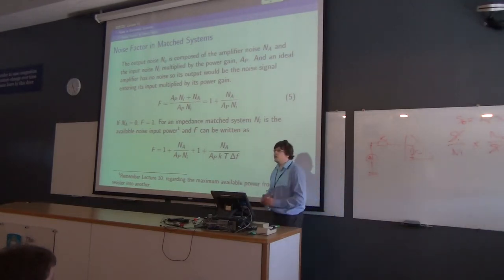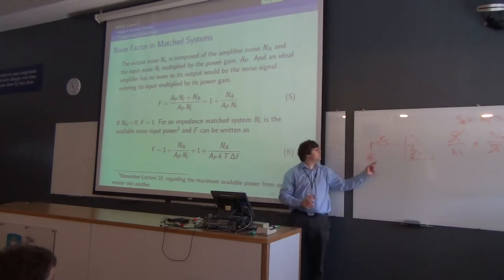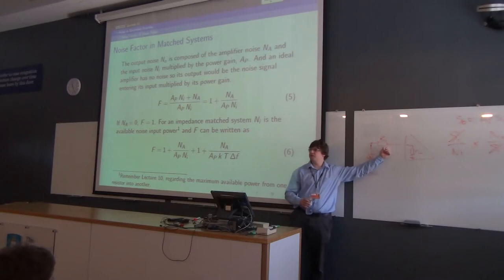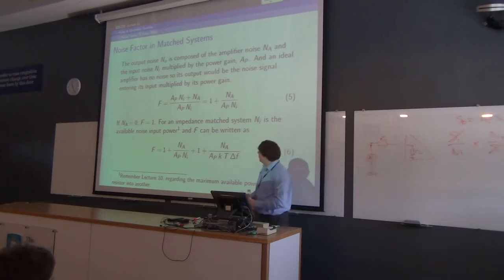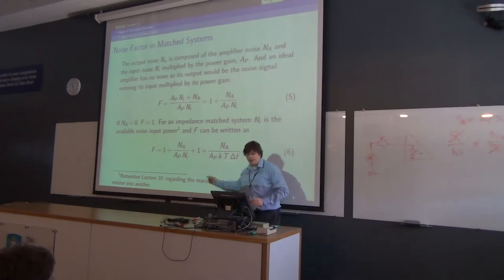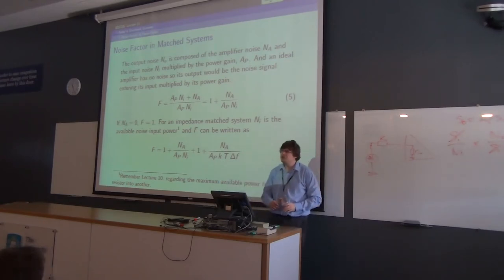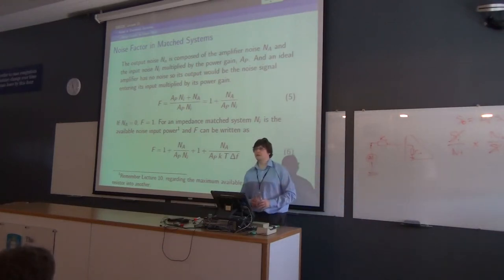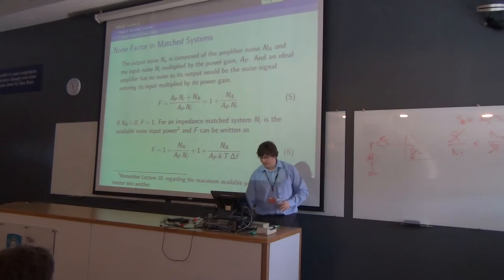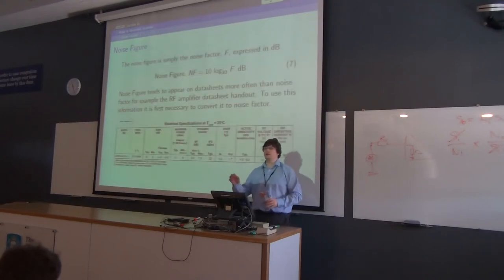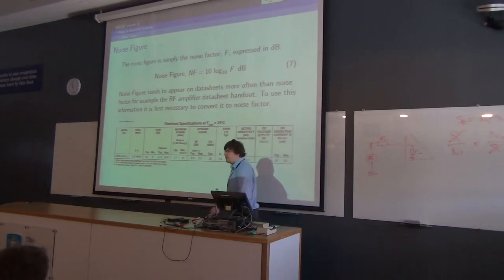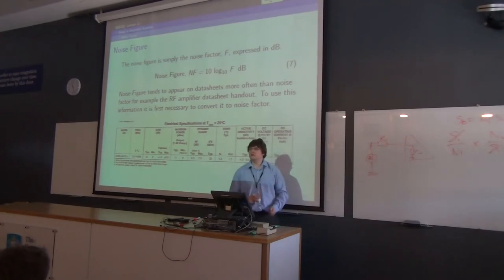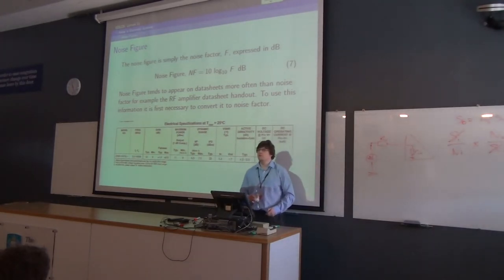The noise power available from the source to the amplifier is KT·ΔF, which is why it appears there. Ni is KT·ΔF — unless I've put a diode or something else there that doesn't have Gaussian noise but has shot noise, in which case it would be a slightly different answer. That's what it says at the bottom — remember lecture 10. Happy with the idea of noise factor as a metric of the goodness of an amplifier in terms of the noise it adds to a system?